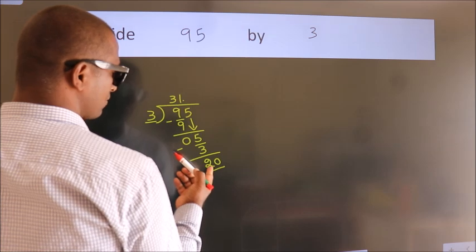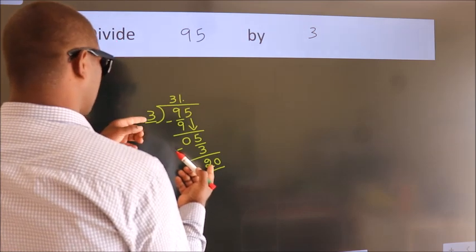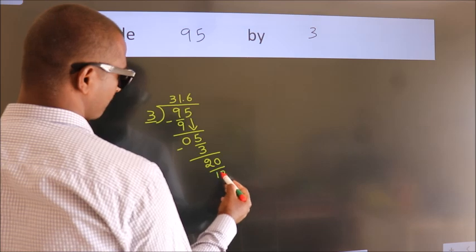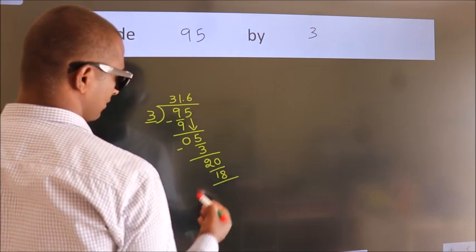So, 20. A number close to 20 in 3 table is 3, 6, 18. Now, we subtract.